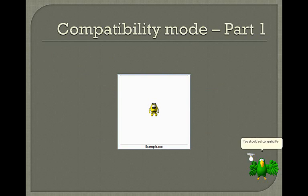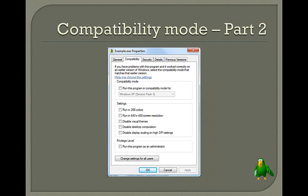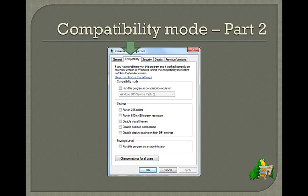You should set compatibility mode for Windows games in order to work on modern Windows. To do so, right-click on the icon and select Properties. Then go to the Compatibility tab and check the first option in the Compatibility Mode section.